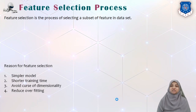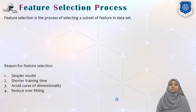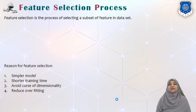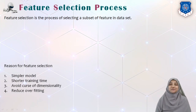We perform Feature Selection for some reasons. Four important reasons to perform Feature Selection or Feature Subset Selection are: to have a simpler model, we would have lesser training time if we have fewer features, we can avoid something called the Curse of Dimensionality, and we are also interested in avoiding overfitting of data.